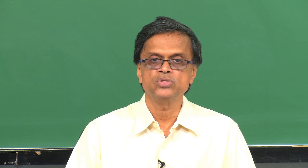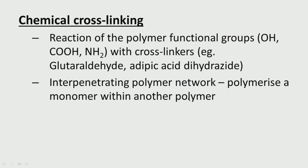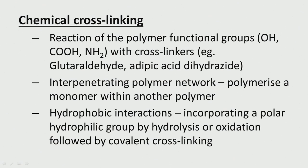Interpenetrating polymer network (IPN) is where a monomer is polymerized within another polymer, creating an interpenetrating network — that is also a chemical cross-linking approach. In hydrophobic interaction cross-linking, a polar hydrophilic group is incorporated by hydrolysis or oxidation, followed by covalent cross-linking. So we create a hydrophilic group in the polymer by introducing a polar group, then hydrolyze or oxidize and cross-link the system.